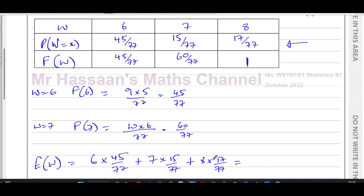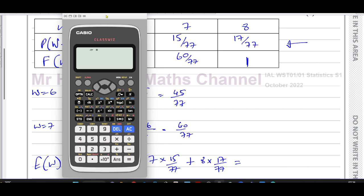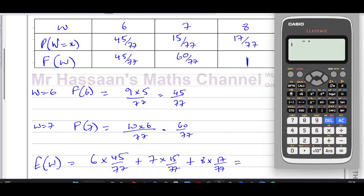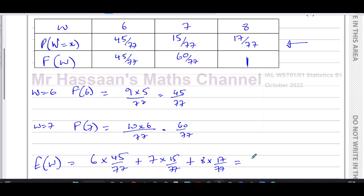And that will give us our answer. So we take our calculator and we simply just put that in our calculator. So we have 6 times 45 over 77, plus 7 times 15 over 77, plus we have 8 times 17 over 77.